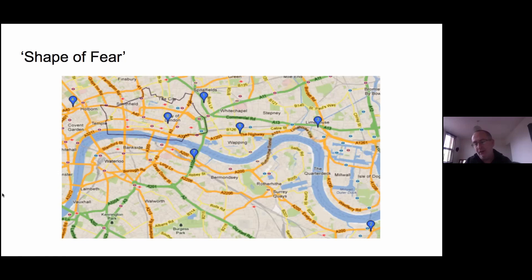Number seven at the bottom wasn't actually built by Hawksmoor, but the land was purchased and the church in Deptford was built by his apprentice John James. So between them he built six churches, with this seventh one by his apprentice, though he was very much involved in the organization of it all. That's what Iain Sinclair called 'the shape of fear' — the pattern that Hawksmoor's churches make. Sinclair says something very much like what comes out in Ackroyd's novel: that Hawksmoor was some kind of Satanist and there was ritual significance to all this.